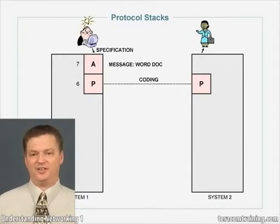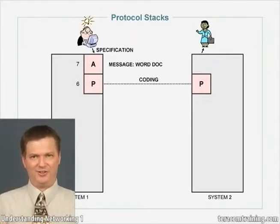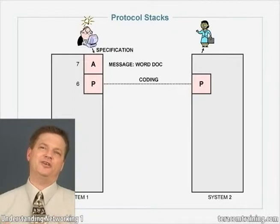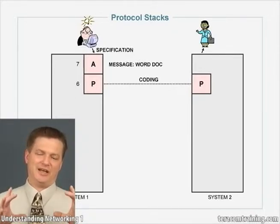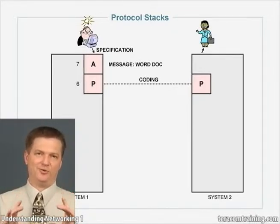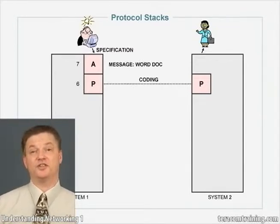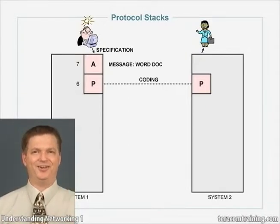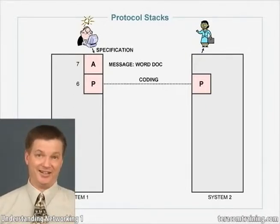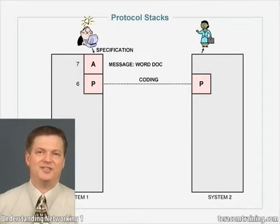So you hand the person the document, they write 'written in English' on a post-it note and put it on the document, put that in an envelope, seal the envelope, and address it to the word processing department of the company in Taiwan. Now they have to send it to the word processing department, but there's no direct connection — they have to go down the protocol stack to get to the physical layer to actually send it. The next stop down is the session layer.